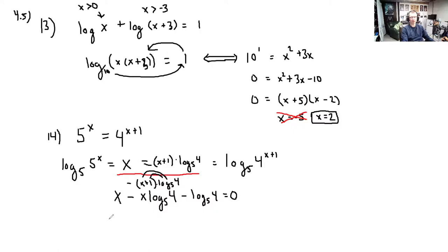Now this is all equal to 0. What I'll do is I'll just factor out the x here. So this gives us (1 - log base 5 of 4) times x. I factored out an x from this pair, and I've got minus log base 5 of 4. Let's add that over to the other side. And then from here, all I have to do is divide. So I'm going to divide by this. So x equals log base 5 of 4 divided by (1 - log base 5 of 4). That's it. Box it. Turn it in. Final answer.